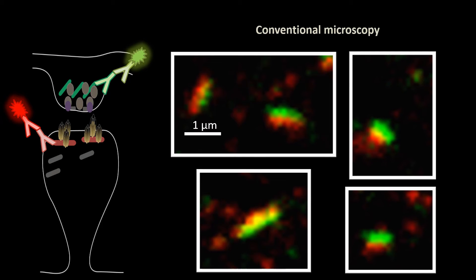Using antibodies which recognize synaptic proteins and are labeled with fluorescent markers, we can identify synaptic proteins precisely.